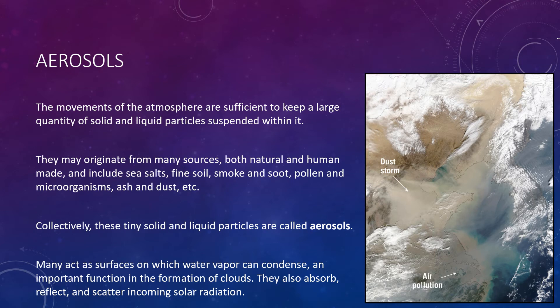From a meteorological standpoint, these tiny, often invisible particles can be significant. First, many act as surfaces on which water vapor can condense, which is an important function in the production of clouds and fog. Second, aerosols can absorb, reflect, and scatter incoming solar radiation. Thus, when an air pollution episode is occurring or when ash fills the sky following a volcanic eruption, the amount of sunlight reaching the Earth's surface can be measurably reduced. Finally, aerosols contribute to an optical phenomenon that we have all observed, the varied hues of red and orange at sunrise and sunset.